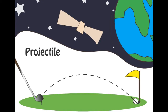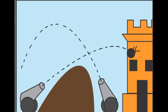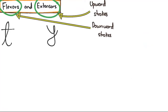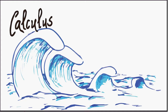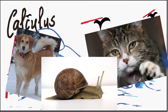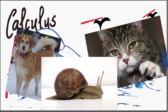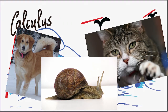In this video we will look at the daily life occurrences of quadratic equations. We know that the path of a projectile is called a parabola, and thus the equation of a path will be a quadratic equation. Downward strokes are called flexors and upward strokes are called extensors. The motion of waves, birds, cats, dogs, and snails is all continuous and therefore can be studied with the tools of calculus.